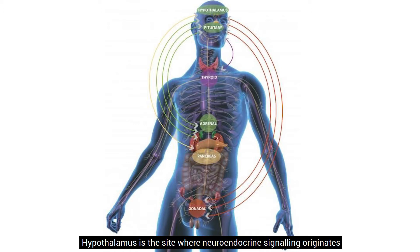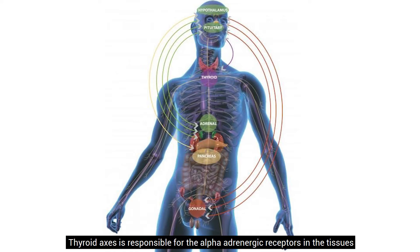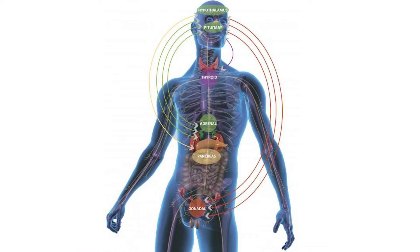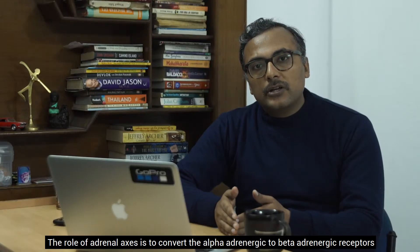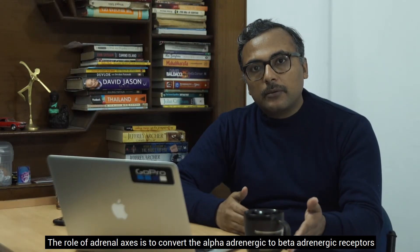The hypothalamus is where autonomic signaling originates, with all signals traveling downward from it. The thyroid axis produces alpha adrenergic receptors in the tissues, while the function of the adrenal axis is to convert those alpha adrenergic receptors into beta adrenergic receptors.